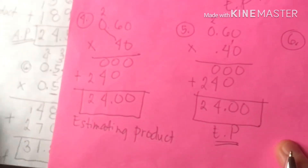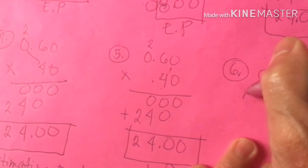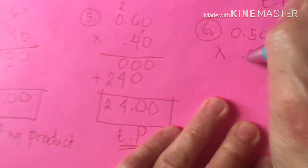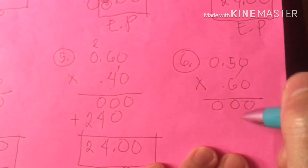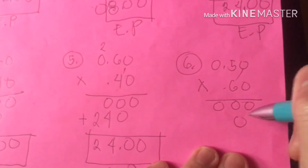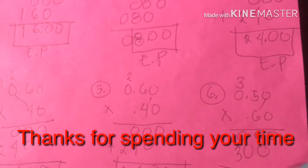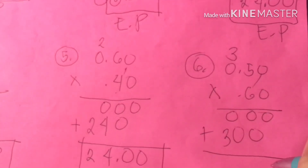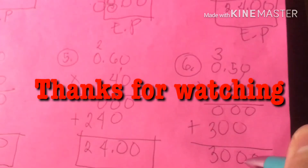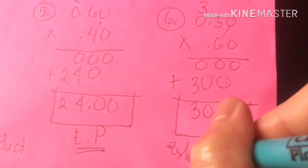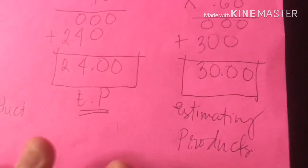For number 6: 0.54 — since 4 rounds down, we write 0.50. And 0.59 — since 9 rounds up, that's 0.60. So 0.50 times 0.60. Count zeros: 1, 2, 3 — then 1, 0, 30. Bring down 0, regroup 3. 6 times 0 is 0, plus 3 — bring down 3. Sum up: 1, 2, 3 — result: 0, 0, 0, 3. Counting decimal places — 1, 2 — this is our estimating product for number 6.